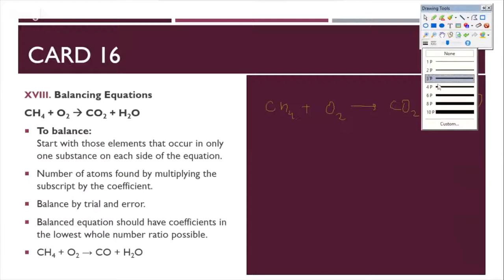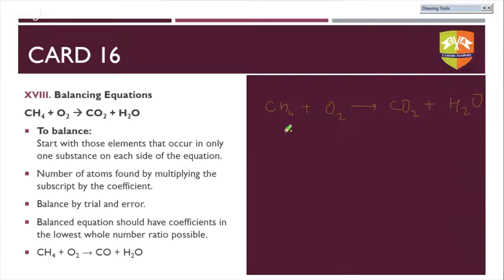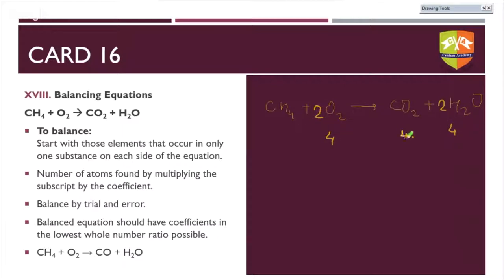For C₂H₆O + O₂ → CO₂ + H₂O: using the table — carbon has two on the reactant side and one on the product side; hydrogen has six on the reactant side and two on the product side; oxygen has three on each side, so oxygen seems balanced. There is a large gap between carbons and hydrogens, so let us start with hydrogen.